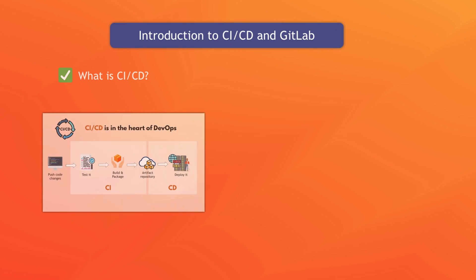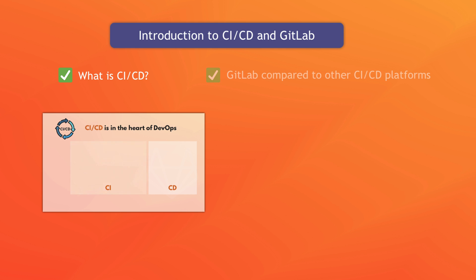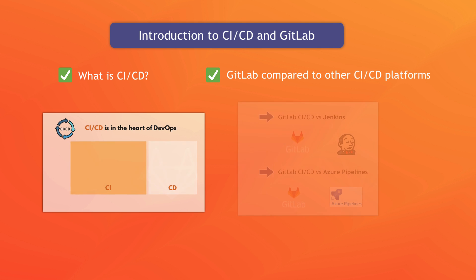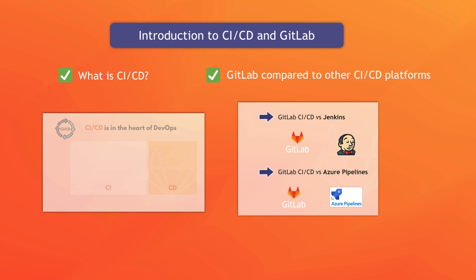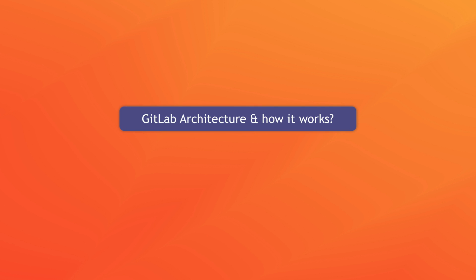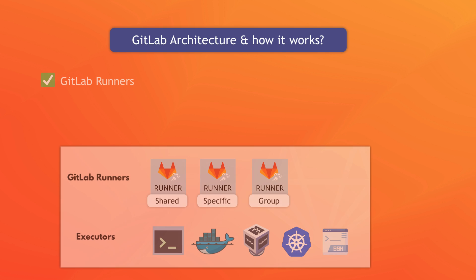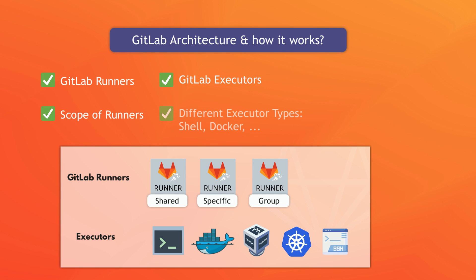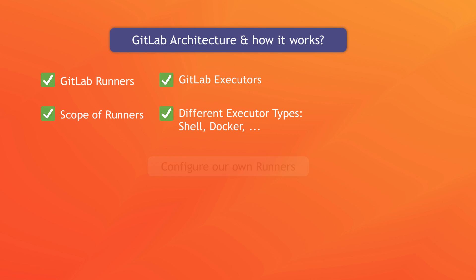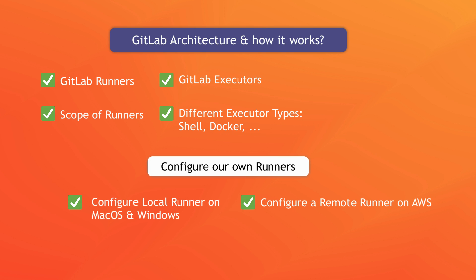So let's dive into the course curriculum to see what you will learn exactly. We'll start with the basics of what CI/CD is in general and a comparison of GitLab CI/CD with other CI/CD tools. Then we'll go on to learn a very interesting topic of GitLab architecture and how it all works. We'll learn about runners and executors, and we will actually create and configure our own runners for the GitLab instance.